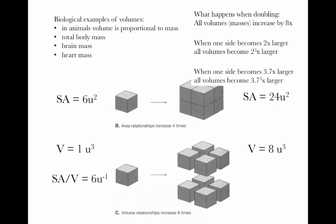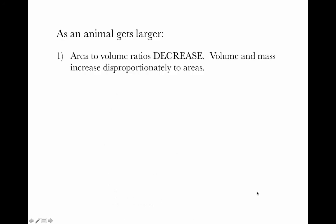Let's see what happens to the surface area to volume ratio, which is a very important property in biological systems. Dividing surface area by volume: 6u squared divided by 1u cubed gives 6u to the negative 1. For the larger doubled cube: 24 divided by 8 gives 3u to the negative 1. So as we increase in overall size, the surface area to volume ratio always decreases. As an animal gets larger, area to volume ratios decrease — volume and mass increase disproportionately to areas.